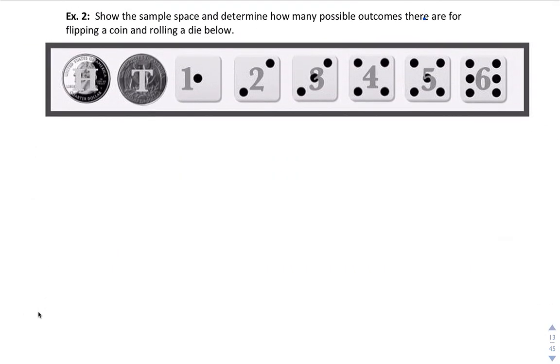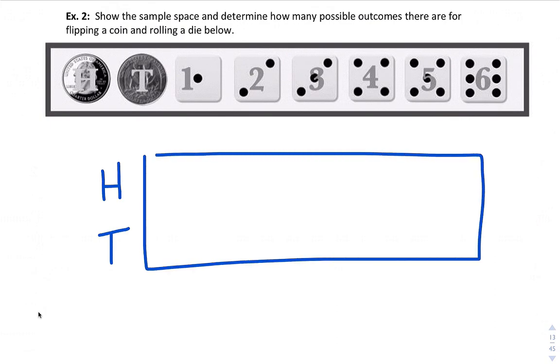Let's do another one. Show the sample space and determine how many possible outcomes there are for flipping a coin and rolling a die. I'll make a table for this one.